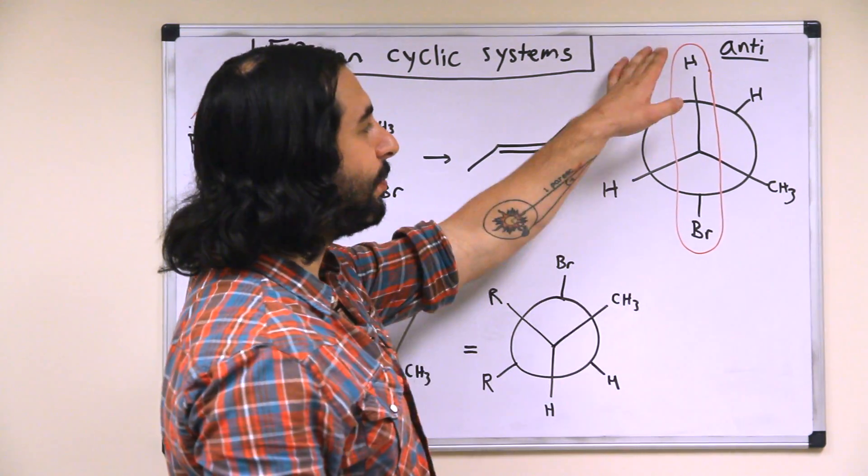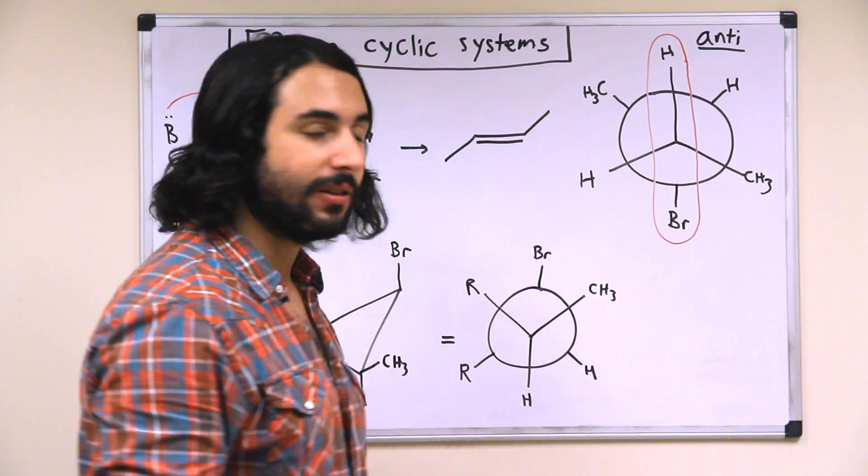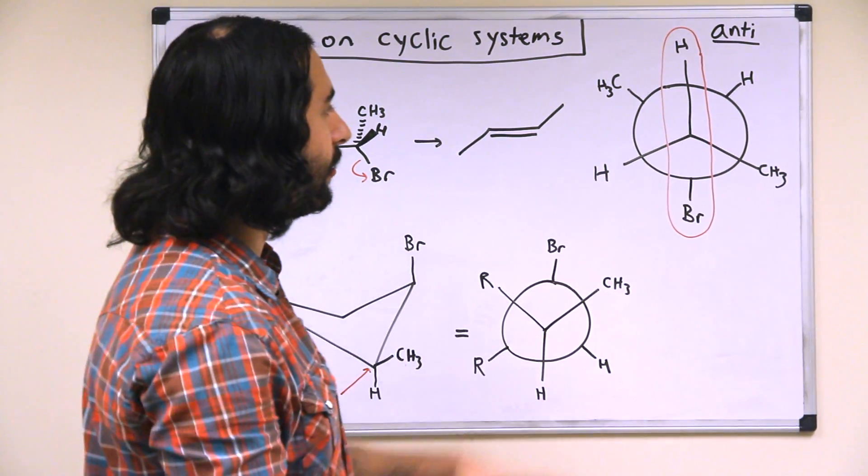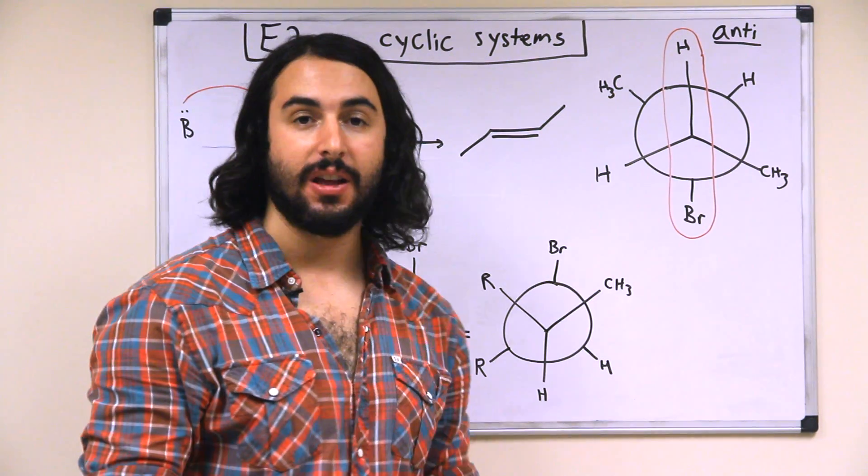So this is the Newman projection looking down this bond. Now it is the case that the proton being extracted and the leaving group must be in anti-conformation with respect to each other, so that's the 180 degree dihedral angle.